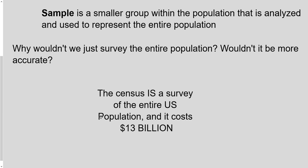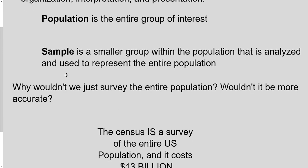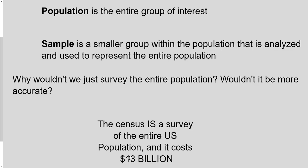The last US census was in 2010 and cost $13 billion. It takes most of the year and is planned for multiple years in advance. This video was recorded in 2020, so another census was just starting — and it was online for the first time, which could bring some costs down. The census asks about ethnicity, age, how long you've lived somewhere, whether you own or rent, how many people live with you, whether you have kids, and similar demographic questions.